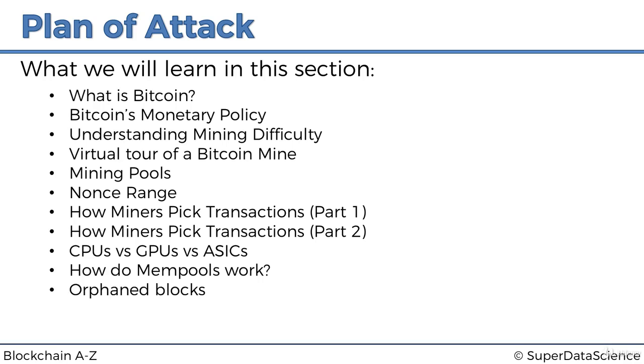Then we'll talk about orphaned blocks. What happens when there's two competing chains? Remember we mentioned orphan blocks in Module 1. Here we'll understand what happens to them in the sense of the transactions in them, and we'll see some examples of orphan blocks online.